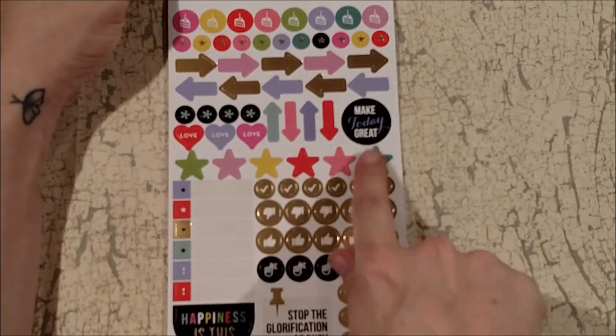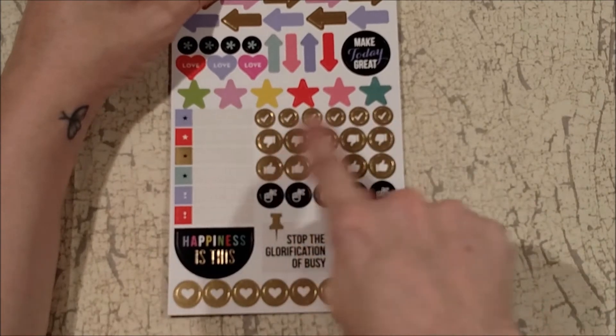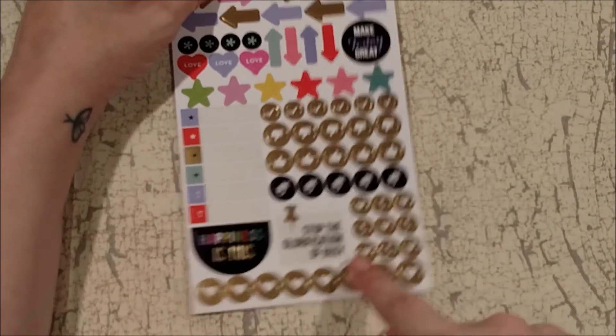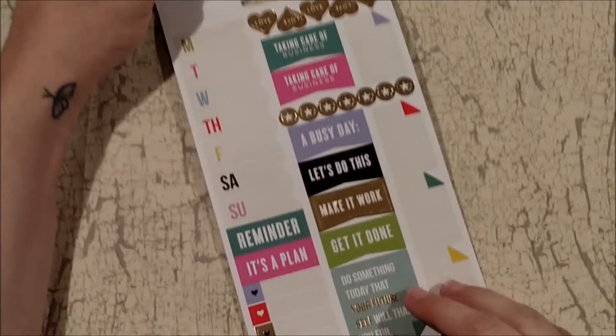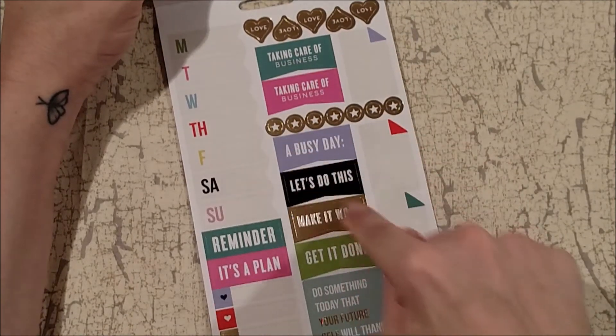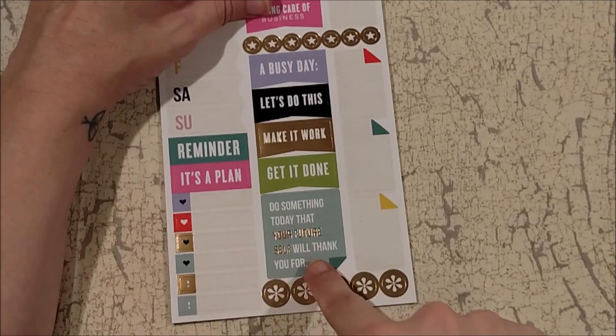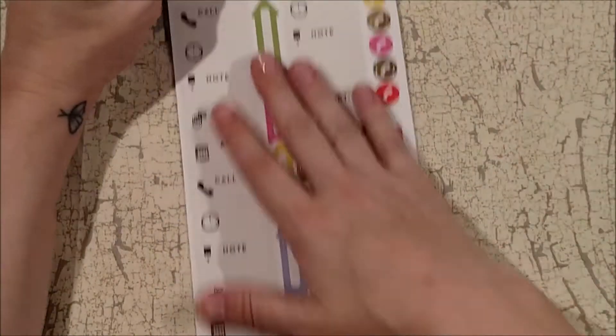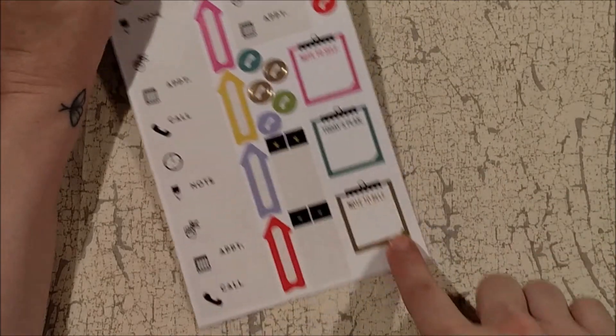And then a lot of this page is foiled and it just says things like 'today's the day,' 'make a plan,' 'important,' 'do what is right not what is easy,' 'always be kind,' 'to do,' 'let's go.' And then these over here say 'don't forget,' 'birthday,' and 'important' and it repeats multiple times. And then this page here is birthday icons, arrows, some label stickers, 'happiness is this,' 'stop the glorification of busy,' and then a lot of just check marks, thumbs up, thumbs down. Or you know you flip those over and they could be all thumbs ups. Some 'remember' with little ribbons, hearts, and exclamation points and then more hearts in the gold foil.